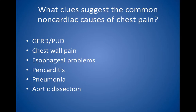Treat achalasia with pneumatic dilatation or botulinum toxin administration. Treat nutcracker esophagus or esophageal spasm with calcium channel blockers. If medical treatments are ineffective, surgical myotomy may be needed. For pericarditis, look for a recent viral upper respiratory infection. The ECG shows diffuse ST segment elevation. The erythrocyte sedimentation rate, or ESR, is elevated, and a low-grade fever is present. Classically, the pain is relieved by sitting forward. The most common cause is infection with Coxsackie virus. Other causes include tuberculosis, uremia, malignancy, lupus, or other autoimmune diseases.